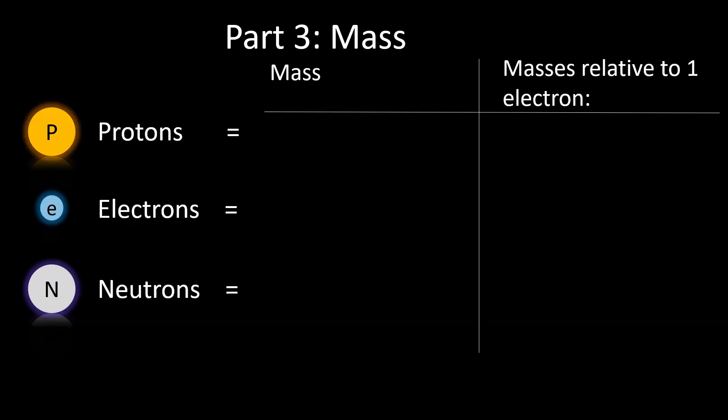For their mass, the mass of a proton is approximately 1.673 × 10^-27 kilograms, while the mass of an electron is considerably smaller, around 9.109 × 10^-31 kilograms.